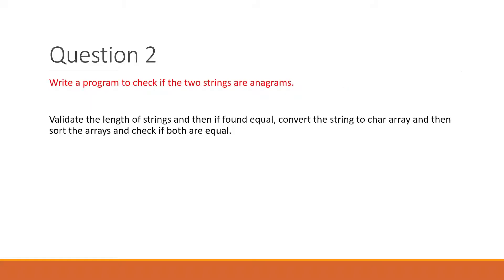The second question is based on strings — we have to check whether two strings are anagrams. An anagram is a word where you rearrange the letters to form a different word. For example, 'race' (R-A-C-E) and 'care' (C-A-R-E) — all four letters are common, just rearranged. Such words are called anagrams.